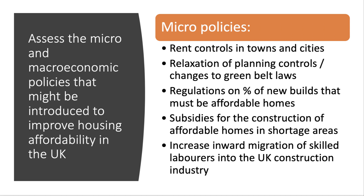Let's think synoptically — what about some micro policies to improve housing affordability? Some people are considering rent controls in major towns and cities including London. Rent control would cap either the level or rate of growth of rented property — that's a controversial intervention. Others argue that a better approach would be to relax the supply side of the market by making planning less onerous, less time consuming and expensive, and perhaps making it easier to build on green belt land. There could also be regulations on the percentage of new builds that must be affordable homes.